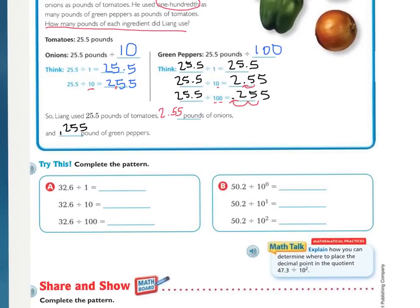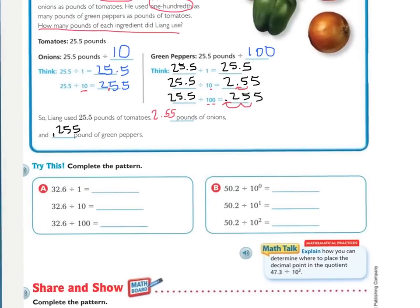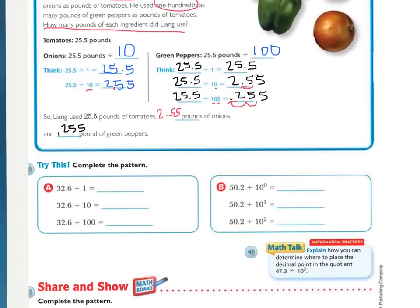Complete the pattern: dividing by 1, dividing by 10, and dividing by 100. For part A: 32 and 6 tenths divided by 10 is 3 and 26 hundredths, because there's one zero so we move the decimal left one place. Divided by 100 is 326 thousandths, because there are two zeros in 100 so we move the decimal two places left.